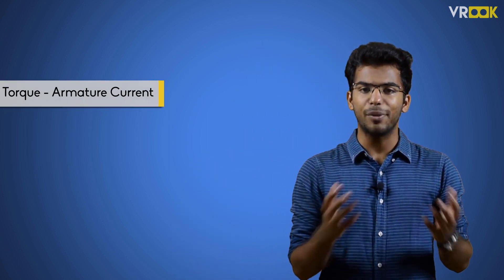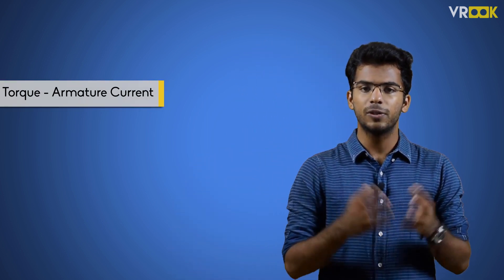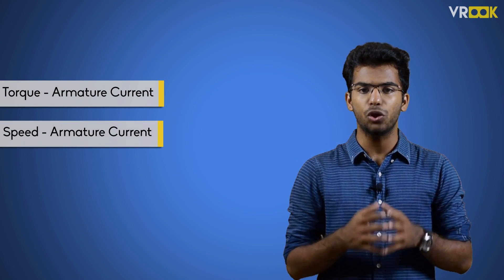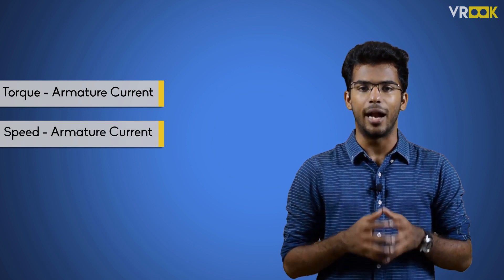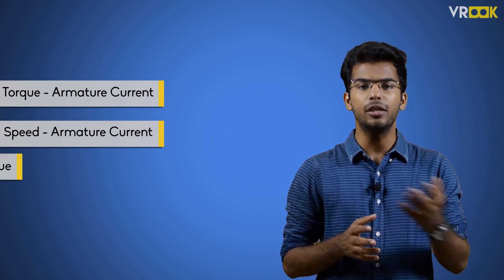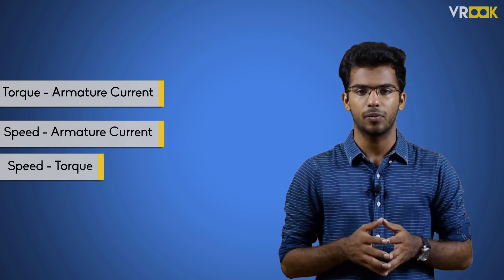As in the case of a shunt motor, we have three major characteristics of the series motor: torque-armature current characteristics, speed-armature current characteristics, and speed-torque characteristics.